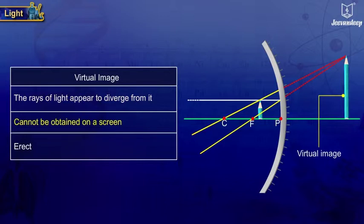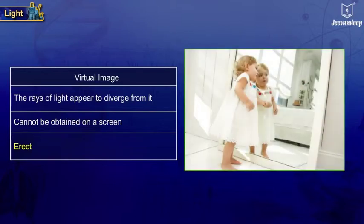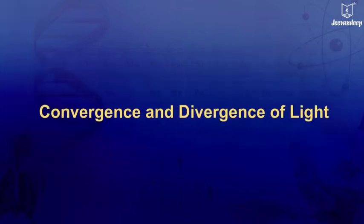A virtual image is erect. The image made by a plane mirror is a virtual image. Convergence and divergence of light.